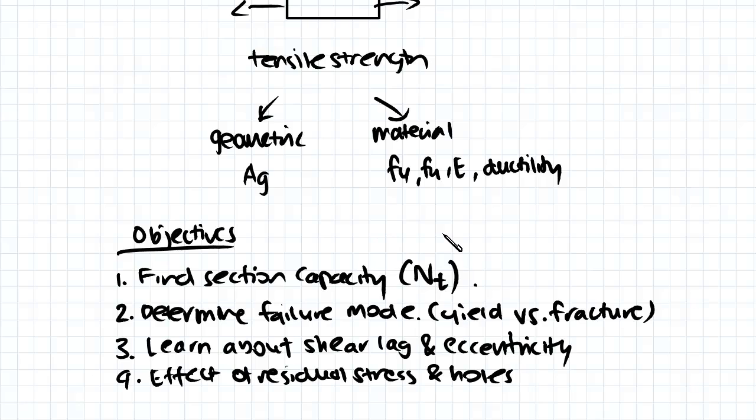We're also going to determine the failure mode, yield or fracture, which happens more likely to occur. And we're going to learn also about the shear lag and eccentricity which are phenomenons that occur when elements of a section are not connected entirely.